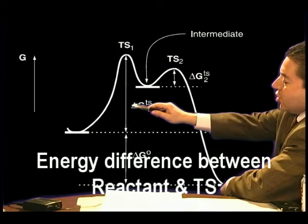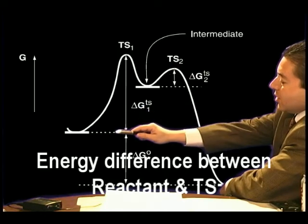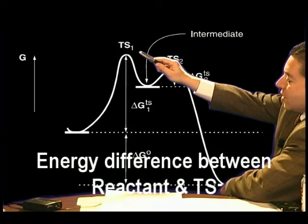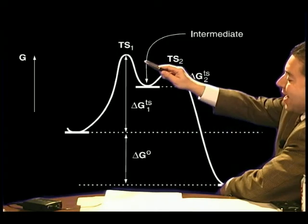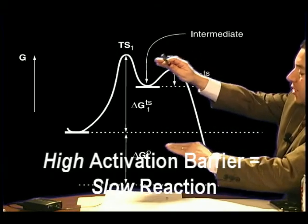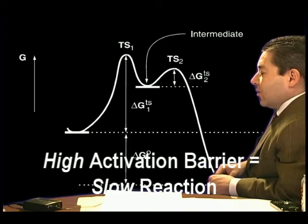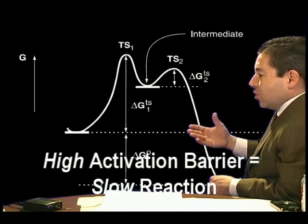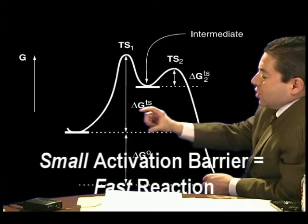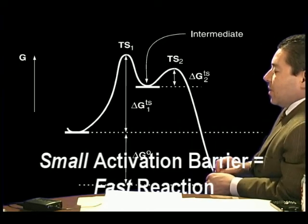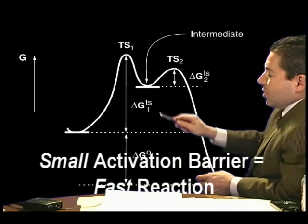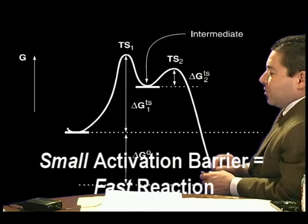So, for example, this delta G1 transition is the reactant in transition to transition state 1. A very high transition state, or high reaction barrier, activation barrier, corresponds to a slow reaction. A very small activation barrier, or small delta G transition, is a fast reaction.